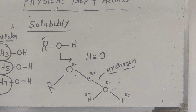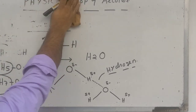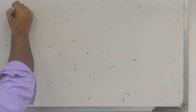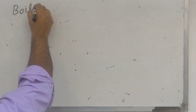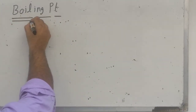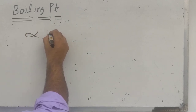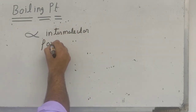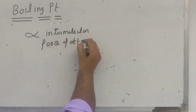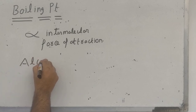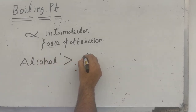That was the first property of alcohol — solubility. Now we come to the next property: the boiling point. The boiling point of any compound depends on the intermolecular force of attraction. Boiling point is directly proportional to intermolecular force of attraction.